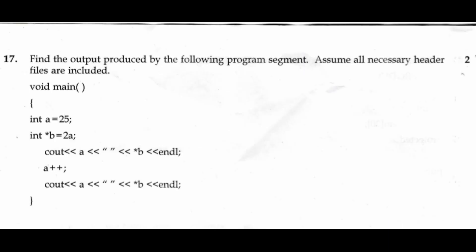Question 17: Find the output produced by the following program segment. Assume all necessary header files are included. void main() { int a = 25; int *b = &a; cout << a << " " << *b << endl; a++; (*b)++; cout << a << " " << *b << endl; } Output: 25 25, next line 26 26.